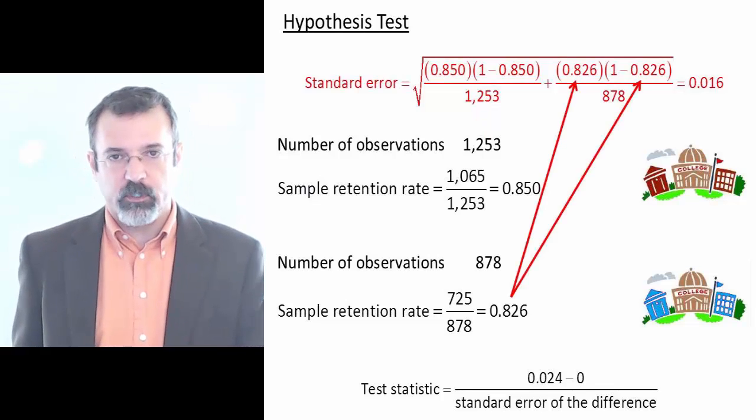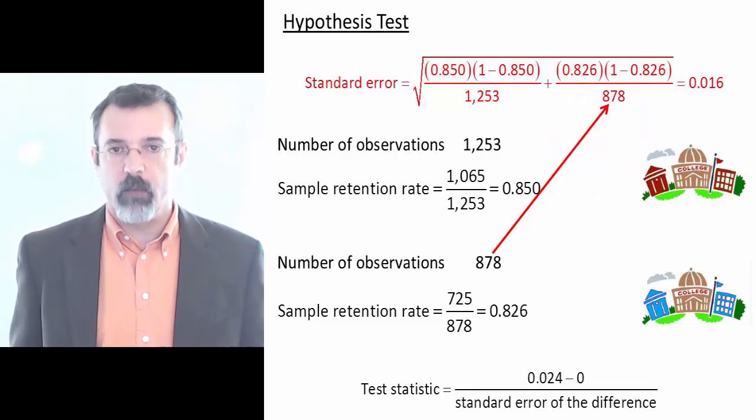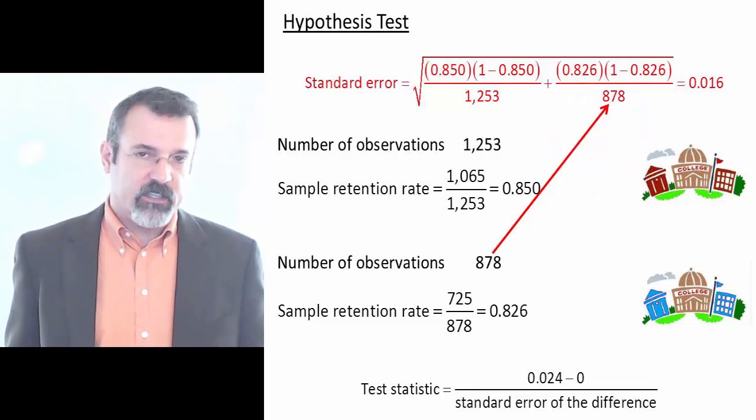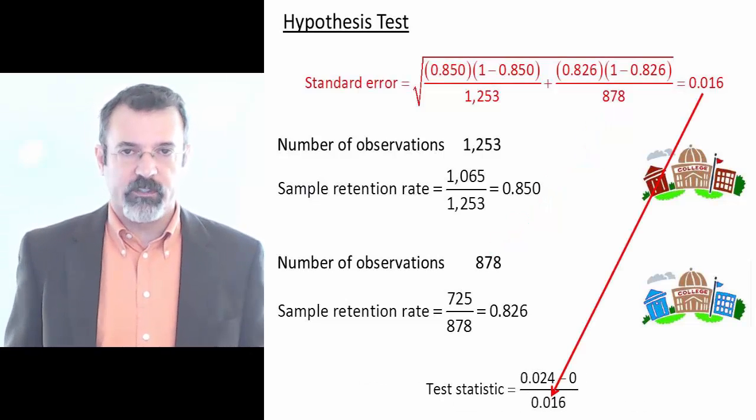plus the second sample proportion, times one minus the second sample proportion, divided by the number of observations in the second sample. In this case, the standard error of the difference in proportions is 0.016.